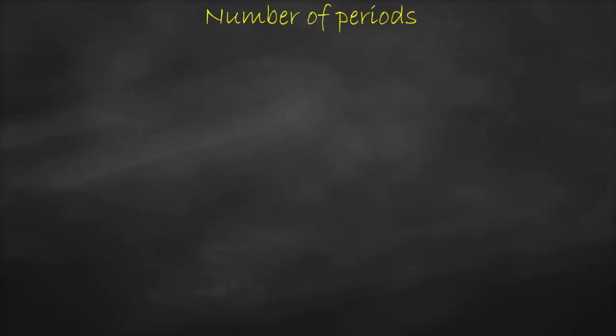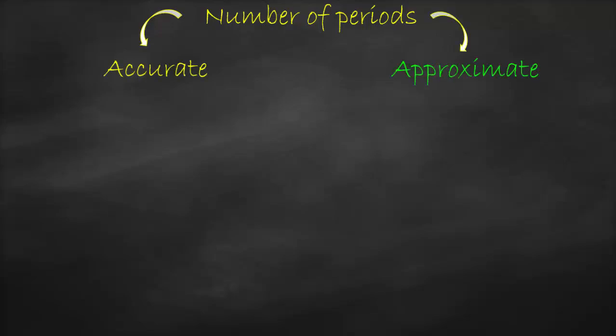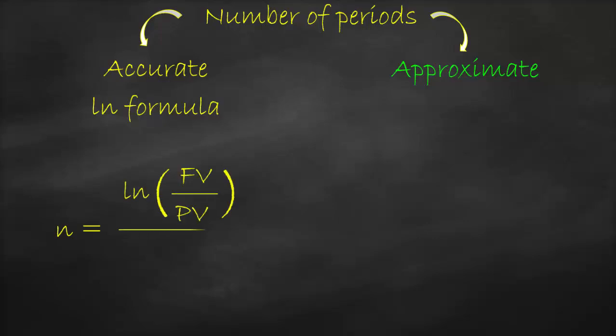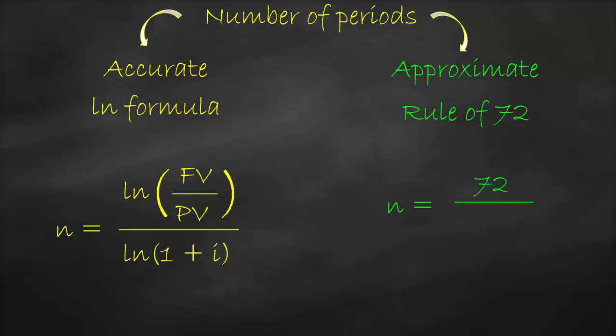To calculate the number of periods of compound interest, we have two formulas. The first is an accurate formula and the second is an approximate formula. The accurate formula is the LN formula, where n equals LN(future value divided by present value) all divided by LN(1 plus i). The approximate formula is the Rule of 72, where n equals 72 divided by the interest rate times 100.